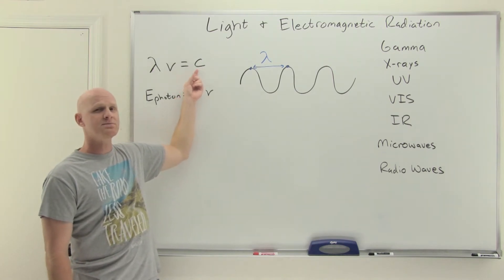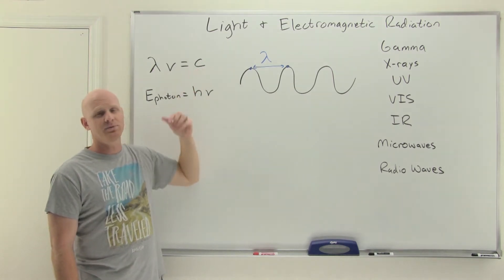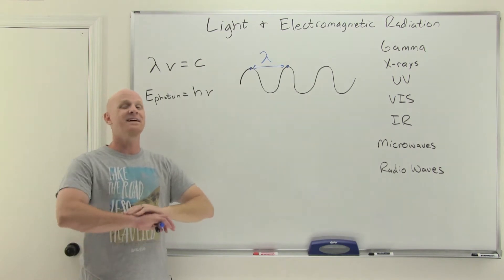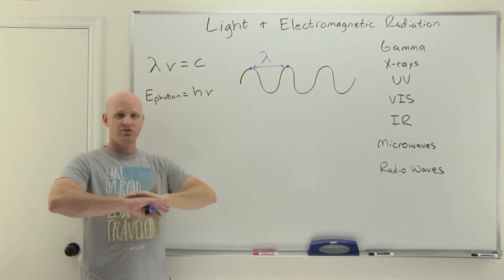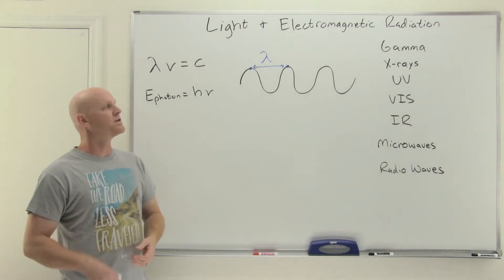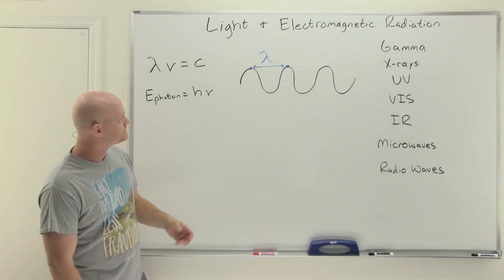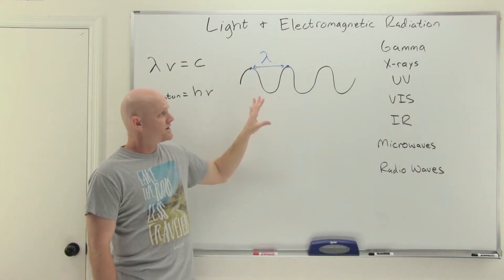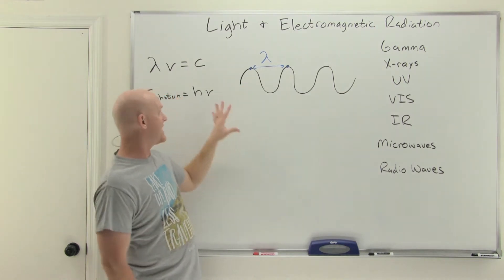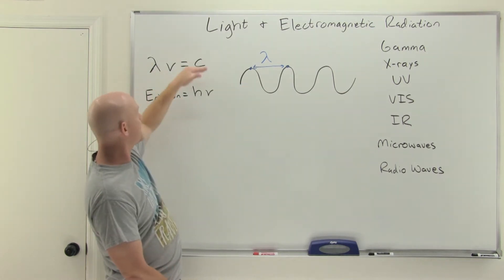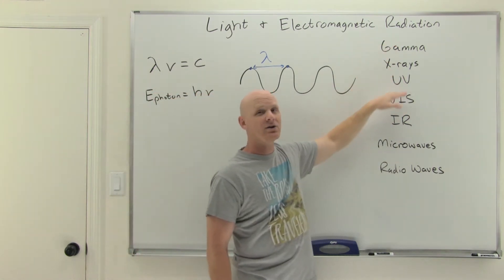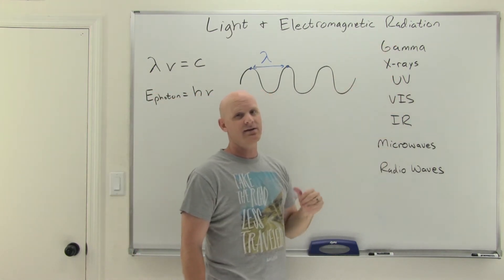C here is going to be the speed of light in a vacuum, which has a constant value of 3.0 × 10⁸ meters per second — you don't need to memorize it, it'll typically be given to you, but if you use it enough it'll start to stick. There are relationships between frequency, wavelength, and energy, and you've got to know how they fit into the entire electromagnetic spectrum.